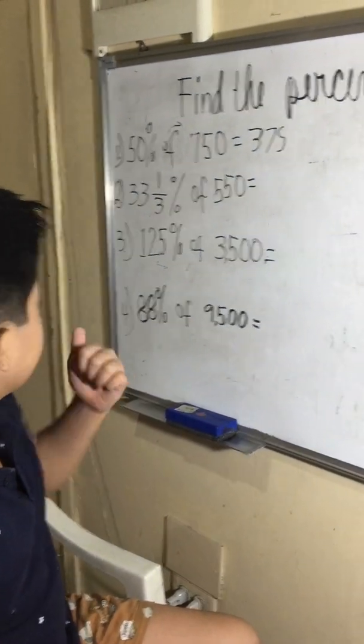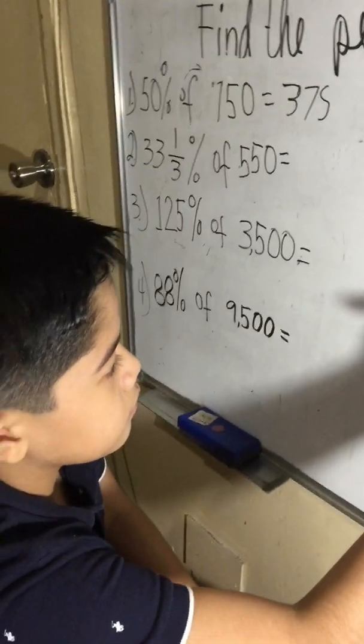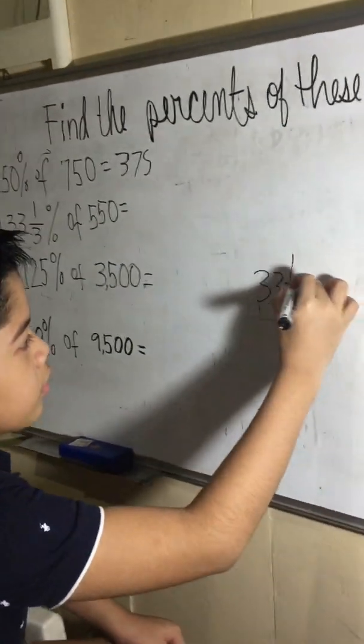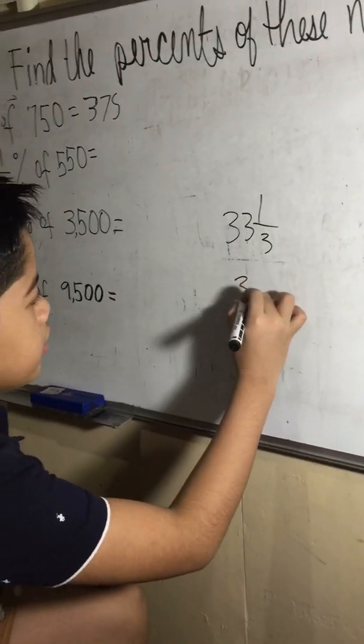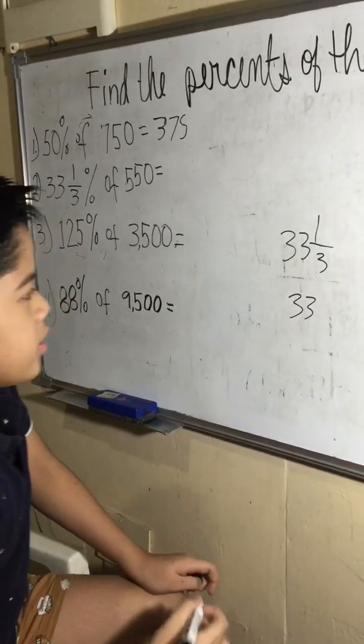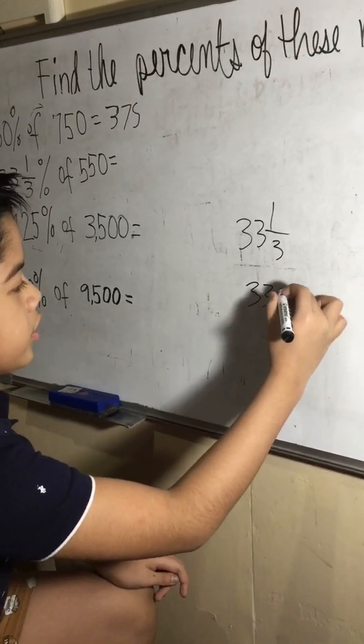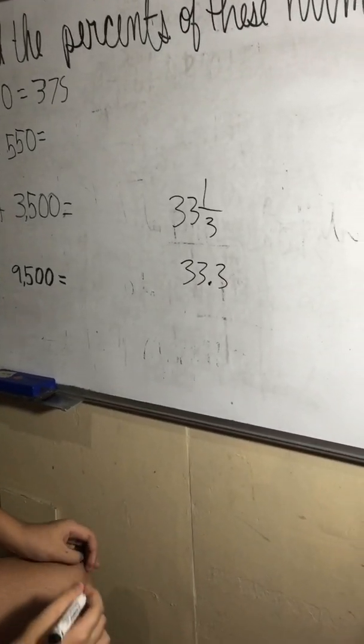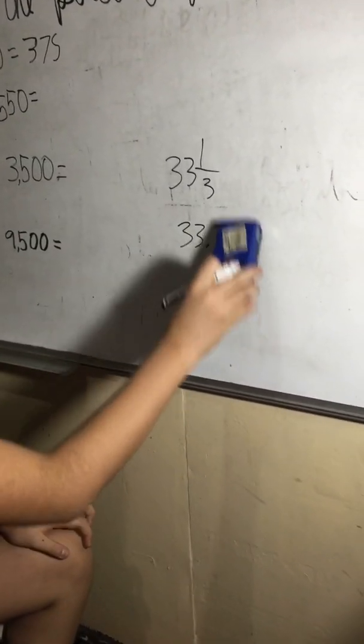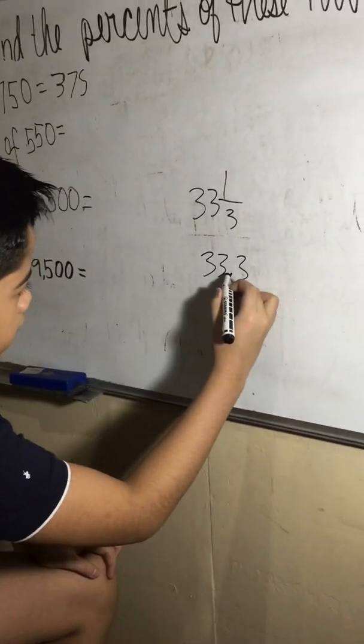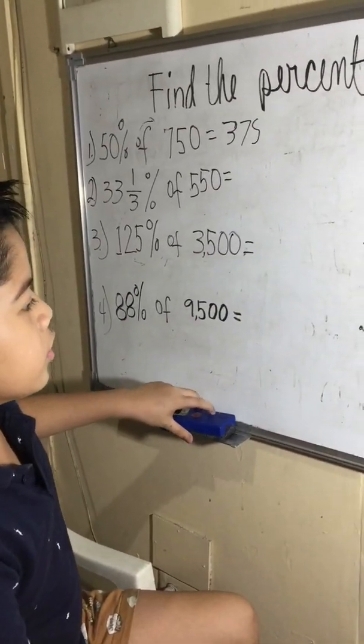Moving on to the next number, number two: 33 and 1/3% of 750. Now 33 would be a whole number, so our interpretation of 33 would be this, and 1/3 that would be converted to a decimal which would be 0.3. Now 33.3 is still a percent, so to remove the percent we need to move the decimal point two spaces to the left, one, two. So this is what we need to multiply to 550.